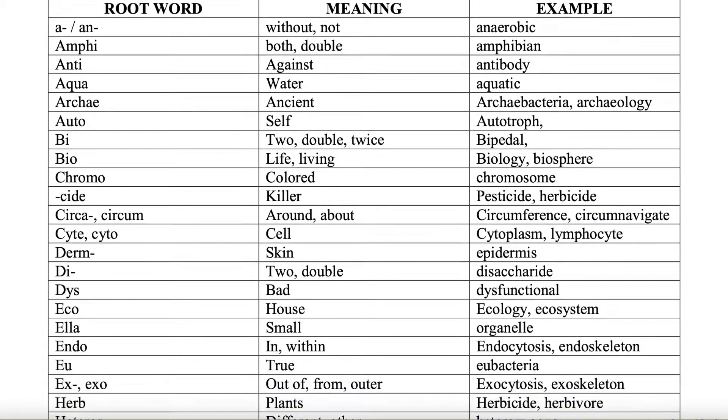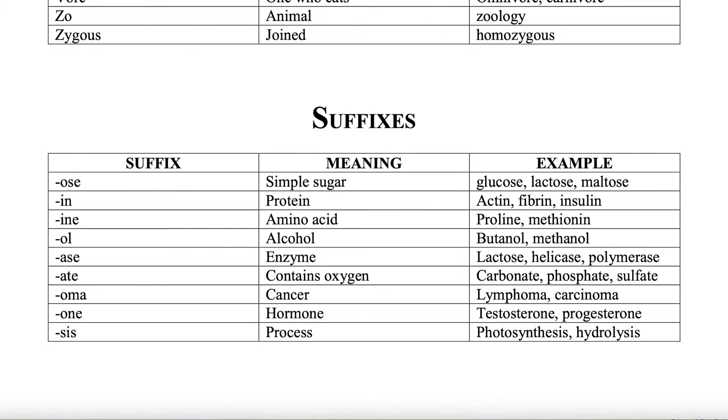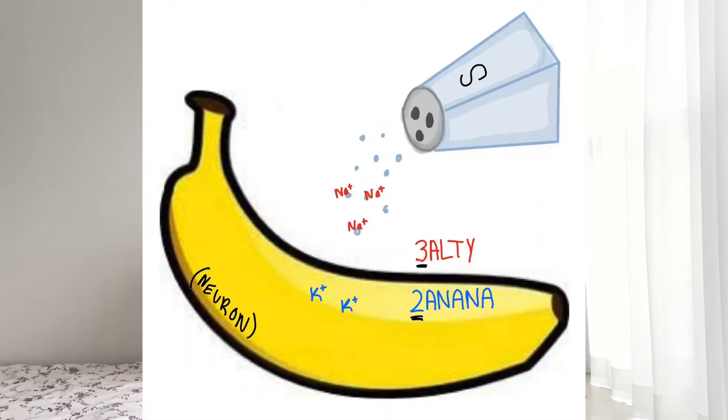My next tip is, if you're having trouble remembering the name of a certain word, like a certain molecule or structure, try to see if you can break down the word into its roots, its suffix and prefix. A related memory tip would be to use mnemonics. For example, I use the mnemonic 'salty banana' to remember the movement of sodium and potassium ions across the membrane of a neuron. You could search online for mnemonics others have created, or just make your own.